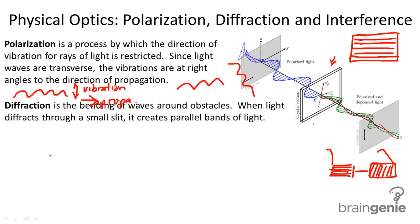Diffraction is the bending of waves around obstacles. When light diffracts through a small slit, it creates parallel bands of light.